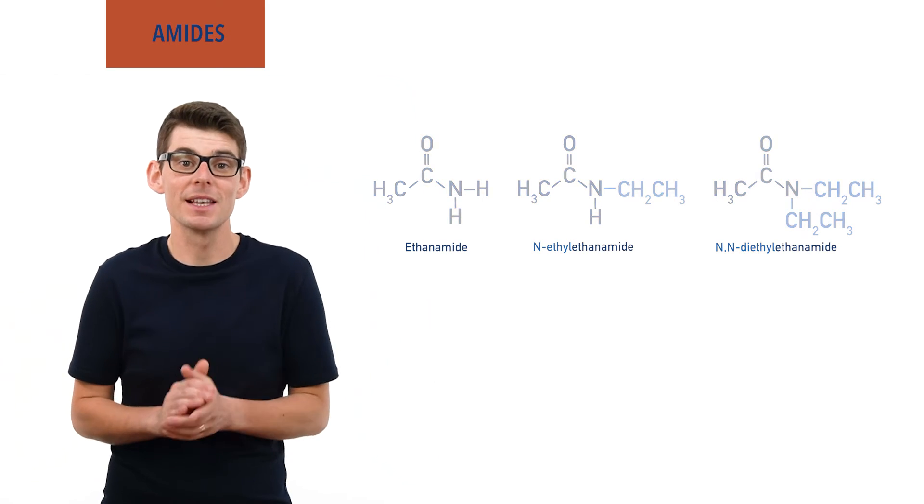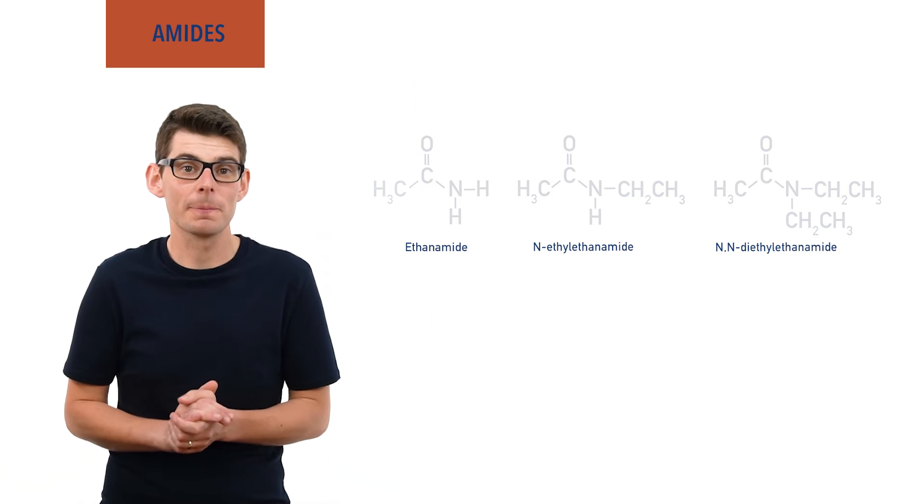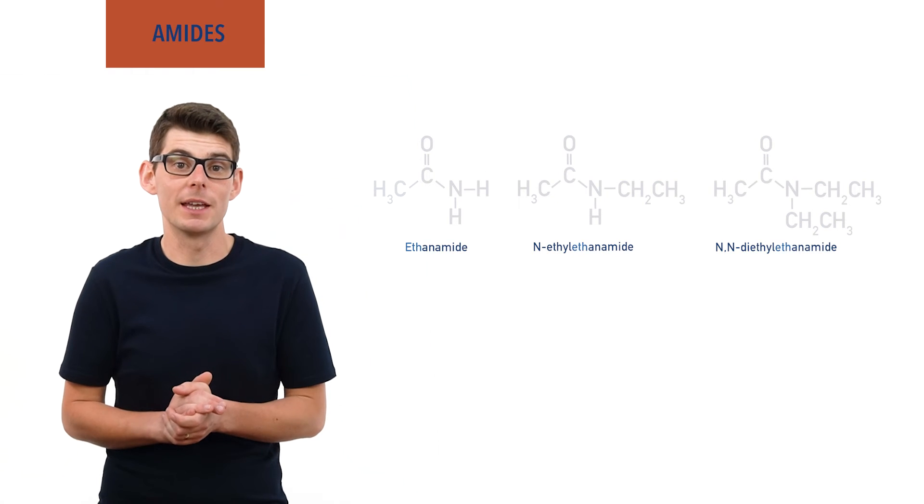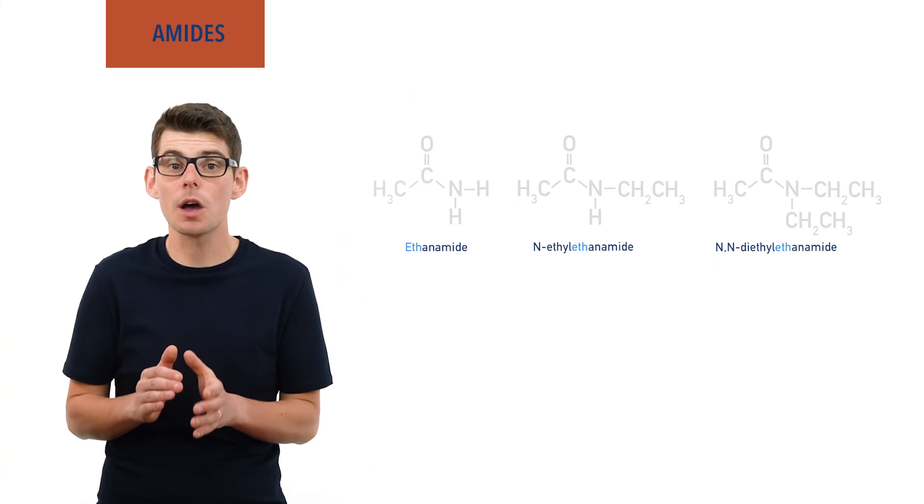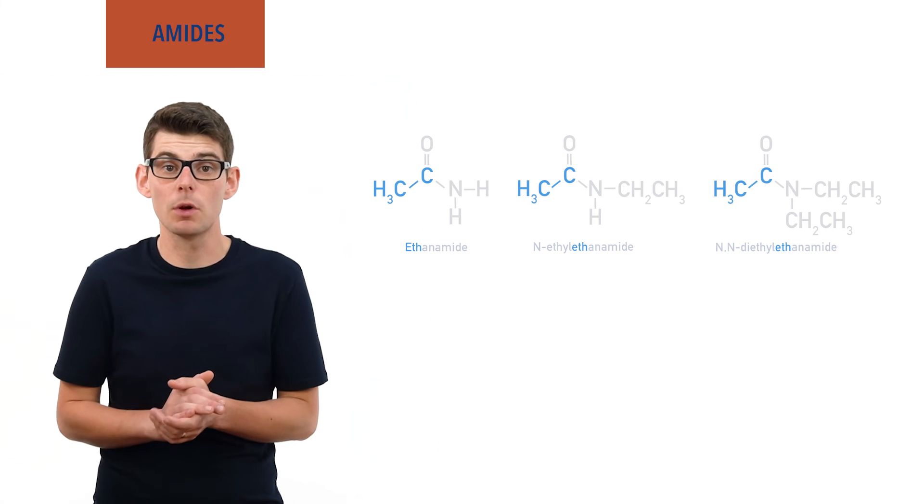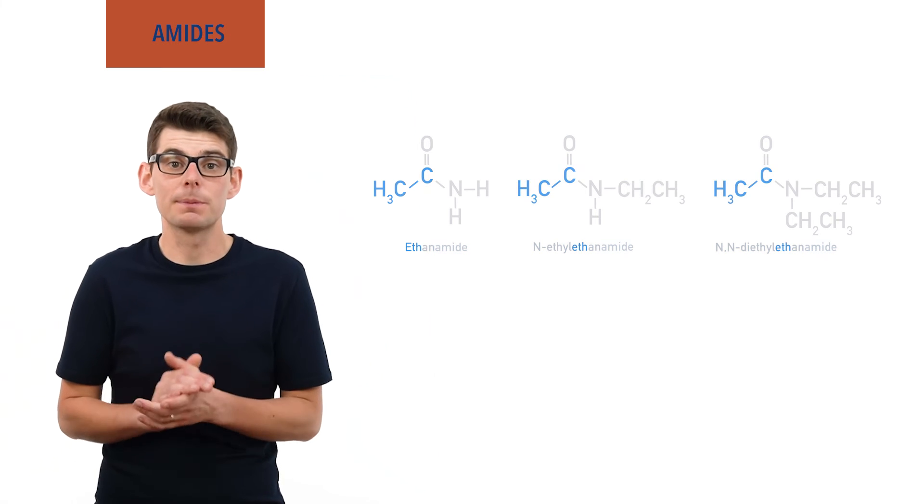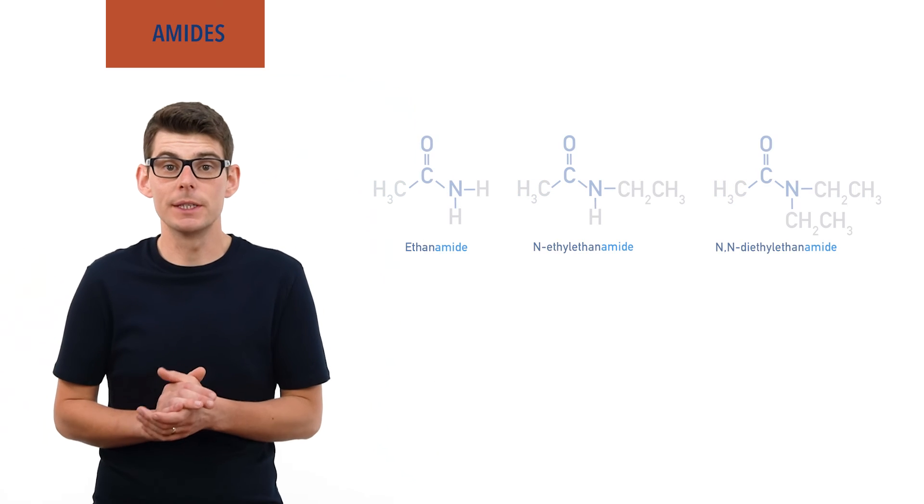The names for amides can look a bit confusing. The 'eth' part of the name tells us that there are two carbons in the main carbon chain of the molecule, and the 'amide' part tells us that the functional group is an amide.